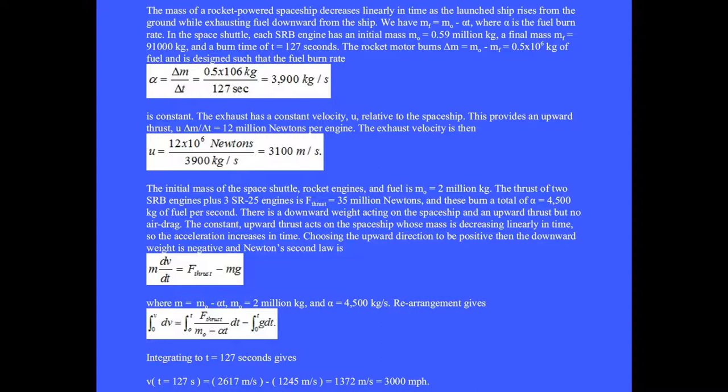Choose the upward direction to be positive then the downward weight is negative and Newton's second law is m dv dt equals the thrust force minus the weight mg where m at any time is m0 minus alpha t. We add m0 equals 2 million kilograms and alpha equals 4500 kilograms per second.